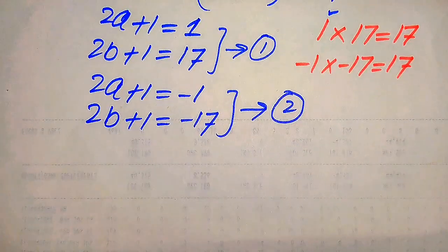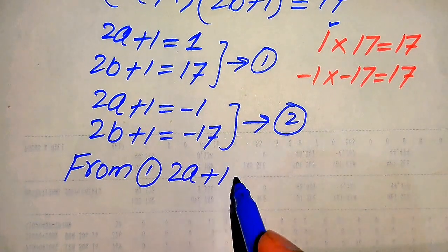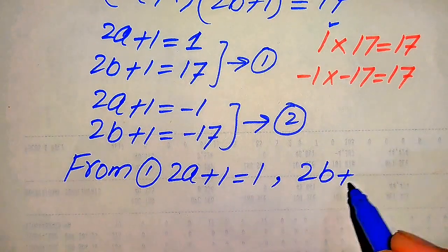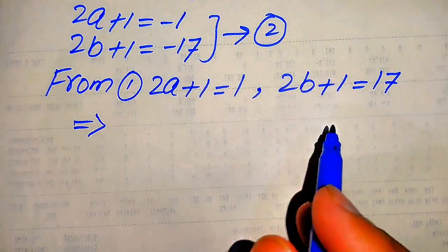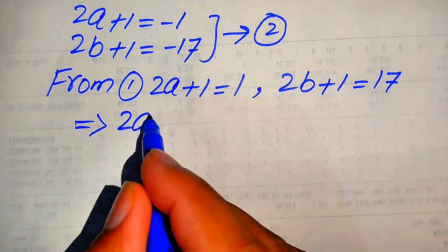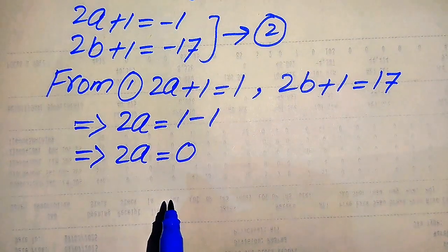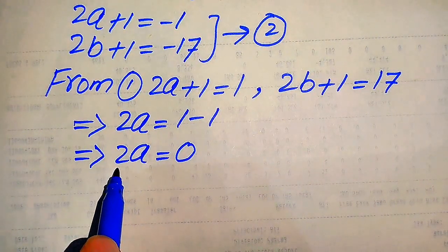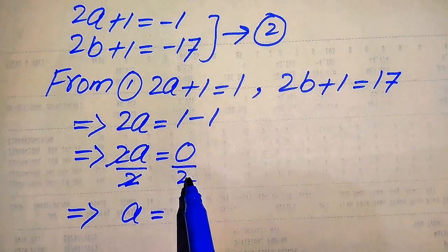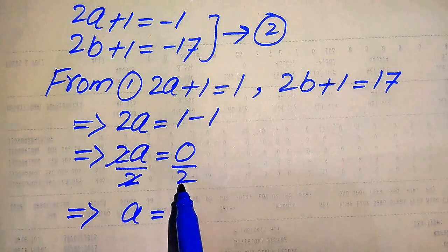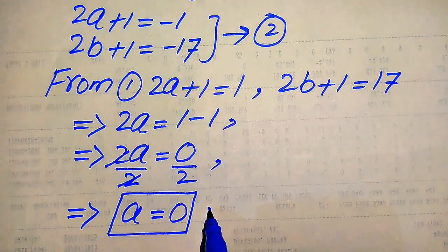Focusing on Case 1: the first equation is 2a plus 1 equals 1. Moving plus 1 to the right hand side gives 2a equals 1 minus 1, so 2a equals 0. Dividing both sides by 2, this 2 cancels and we get a equals 0 over 2, so a equals 0.